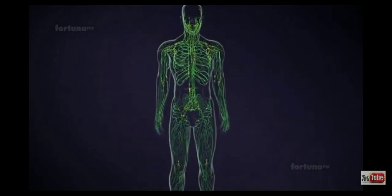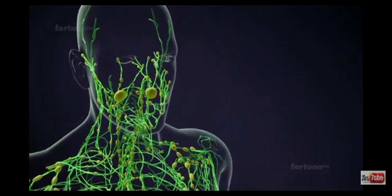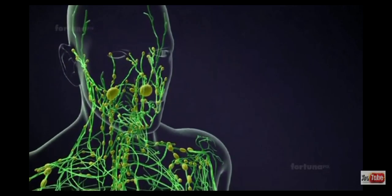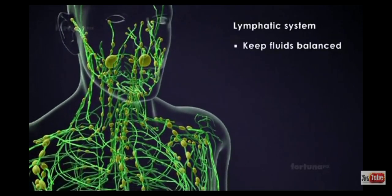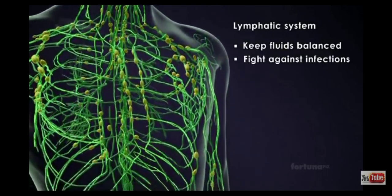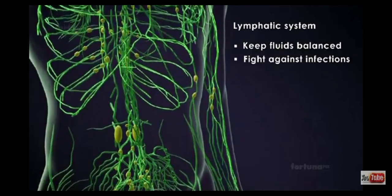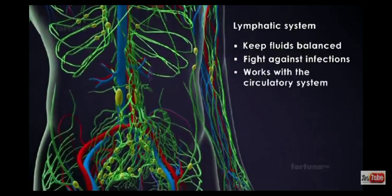Within your body there is a system that functions largely as a drainage network, helping to keep fluids balanced while also helping to fight against infections. This network, the lymphatic system, works with the circulatory system.